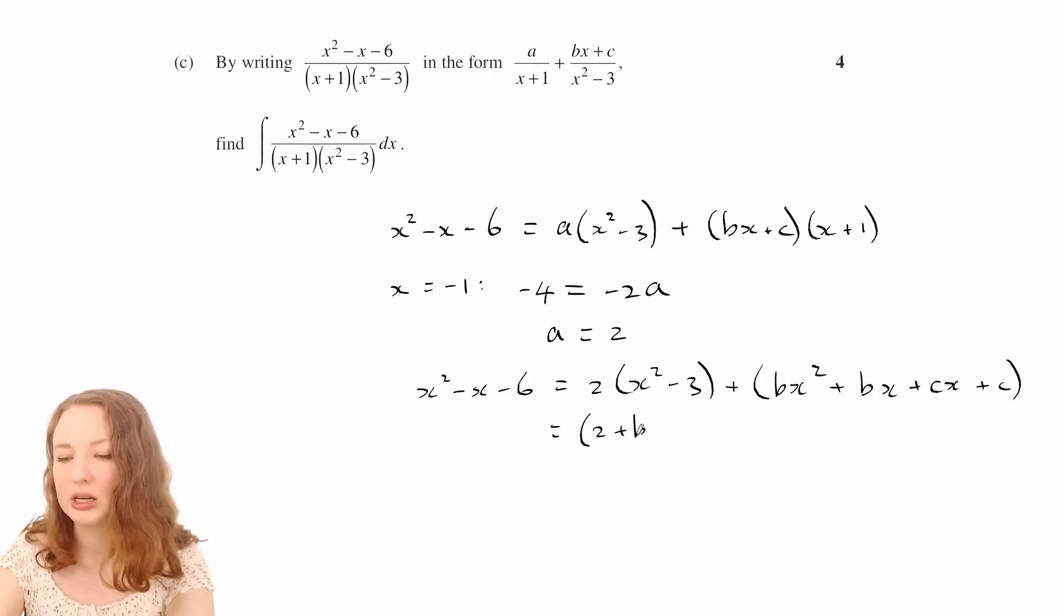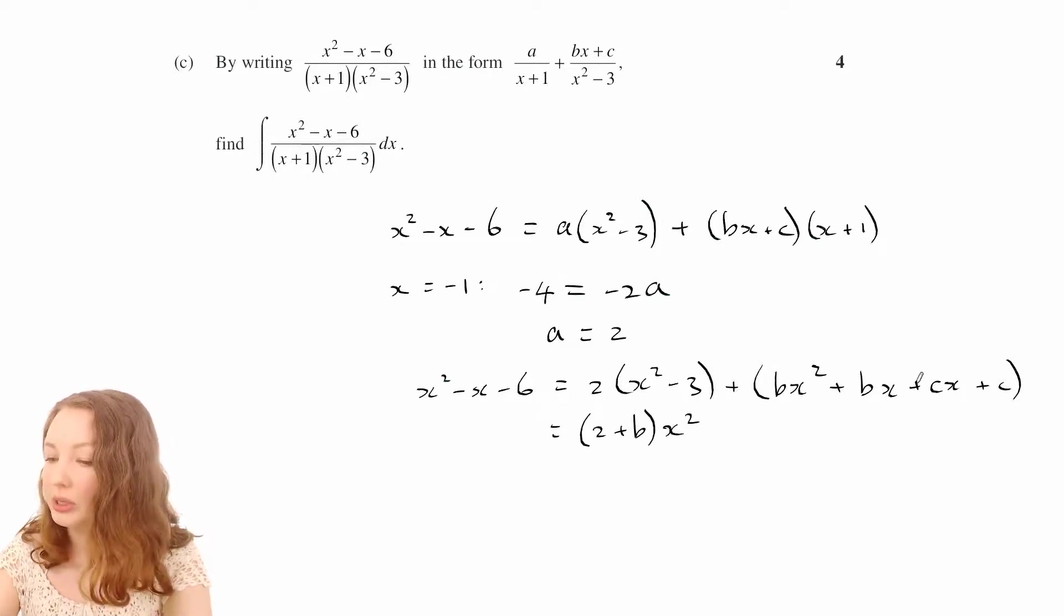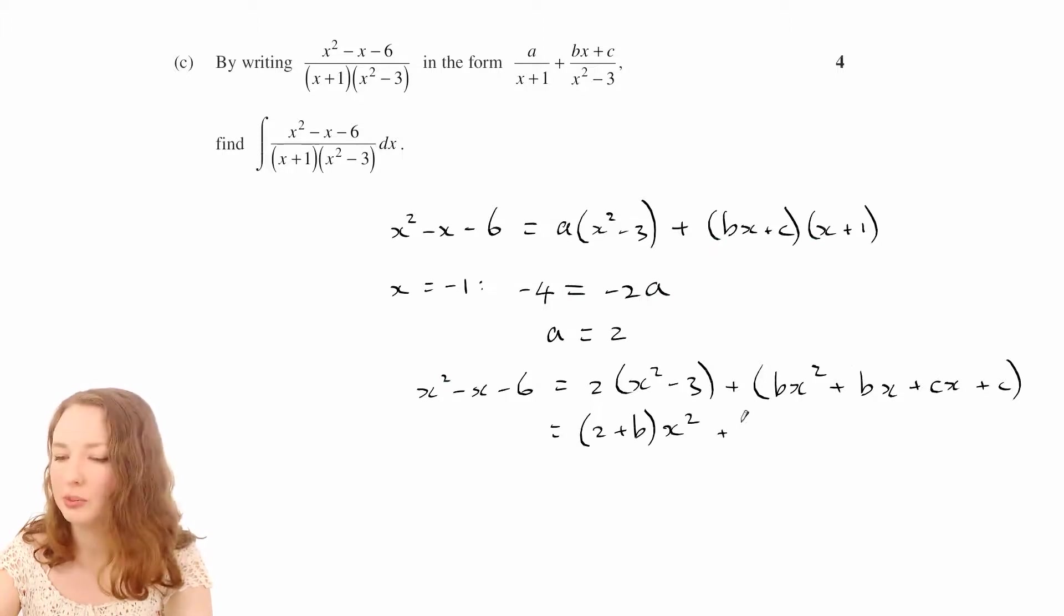And then let's collect things together. So you've got a 2x squared there and a bx squared there, so that makes 2 plus b times x squared. And then we've got bx and cx, so let's call that b plus c times x. And then you've got negative 6 and plus c, so c minus 6.